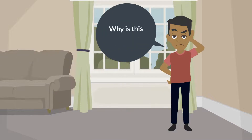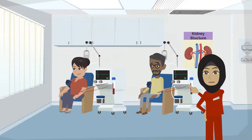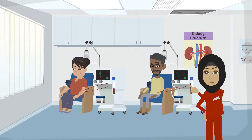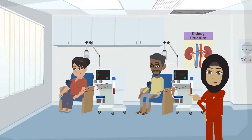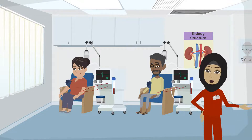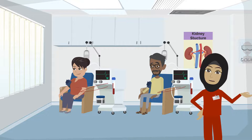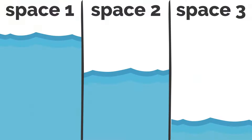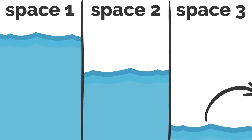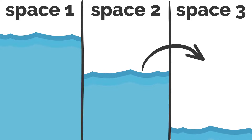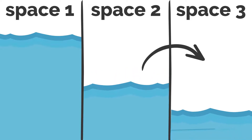You may be asking why this is important. Well, dialysis can only reach and remove water that is in the blood, which is in space 3. But the extra water is in spaces 1 and 2. To remove water from spaces 1 and 2, a movement of water in all three spaces must happen.